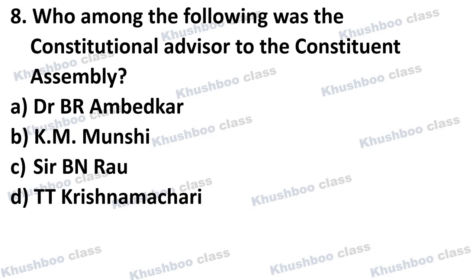Next question: Who among the following was the Constitutional Advisor to the Constituent Assembly? Option A: B.R. Ambedkar, Option B: K.M. Munshi, Option C: Sir B.N. Rao, Option D: T.T. Krishnamachari. The answer is Option C, Sir B.N. Rao. Remember that the Constitutional Advisor to the Constituent Assembly was Sir B.N. Rao.